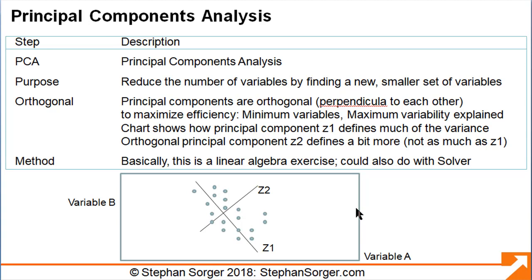PCA aligns Z1 with the highest variability in the data, as we can see on the chart. It then creates Z2, which is orthogonal to Z1, to explain a bit more of the variability. Overall, PCA is essentially a linear algebra exercise, and can even be done using the solver function found in Microsoft Excel.